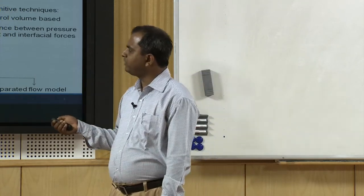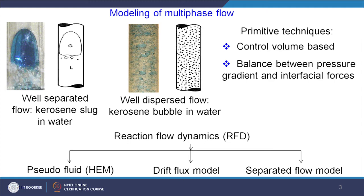Here I have given two experimental figures. In the first, you see a kerosene Taylor bubble in a slug flow followed by some small kerosene satellite bubbles. In the second figure, we have lots of small kerosene bubbles well dispersed in the water boundary. Comparing these two, in the first figure we have well separated flow, while in the second we have good dispersion between the kerosene bubbles in water. In the schematic, writing G and L clearly shows the gas and liquid phases can be identified, but in the dispersed case we cannot write G and L separately because everything looks very, very dispersed.